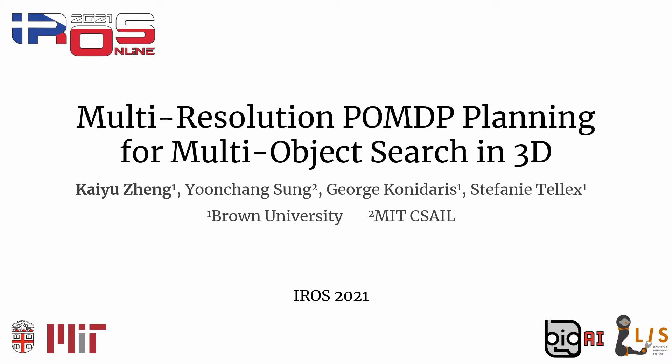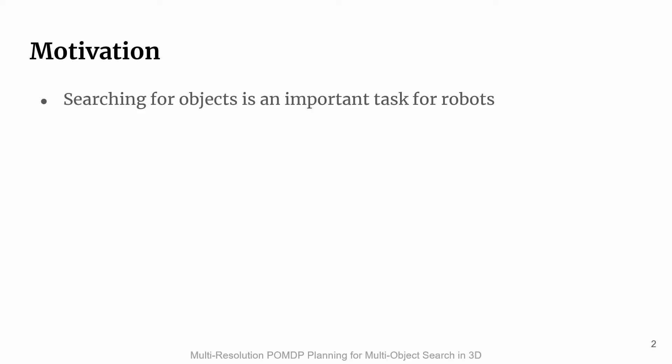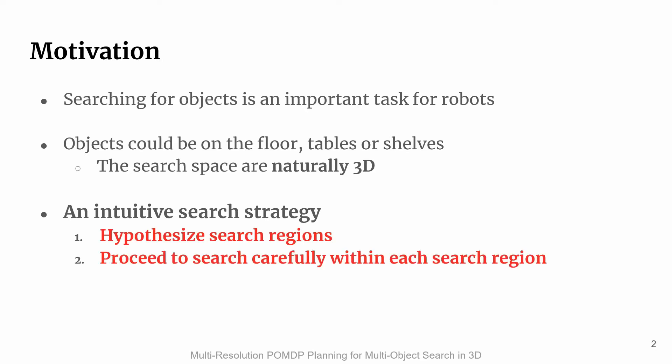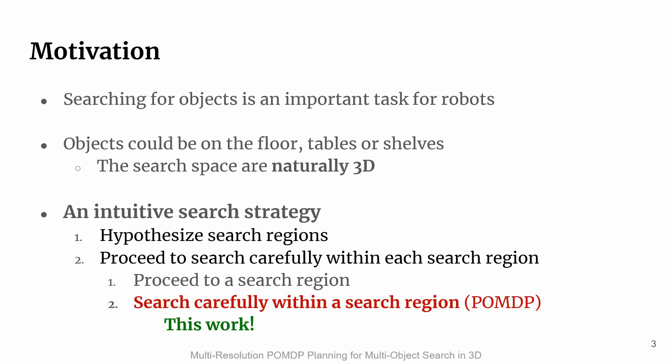Searching for objects is an important task for robots with many potential applications. In human environments, objects could be on the floor, tables, or shelves. The search space is naturally 3D. An intuitive search strategy is to first hypothesize potential search regions, then proceed to search carefully within each region. Ultimately, the success depends on careful search within a region, subject to limited field of view and partial observability of the object's location.